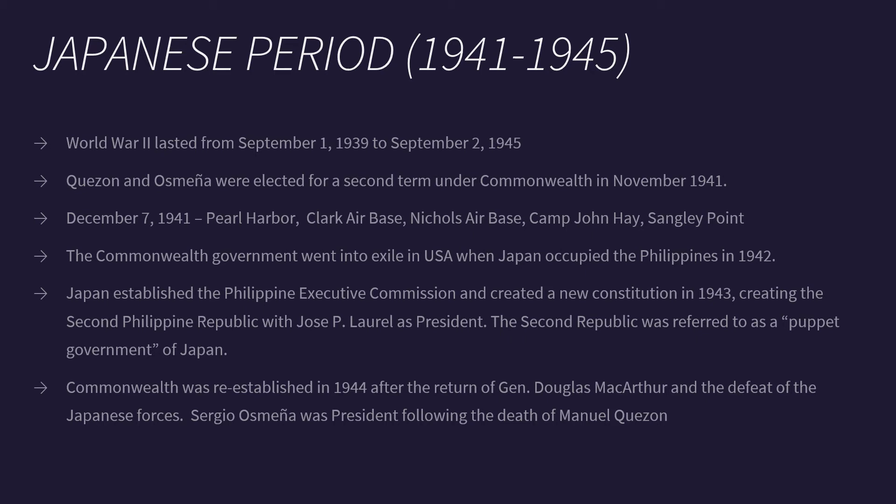In the Philippines, Japan attacked Clark Air Base, Nichols Air Base, Camp John Hay, and Sangley Point — all the military installations of America in the Philippines. This meant that the Philippines had no military protection when Japanese forces arrived. The Commonwealth government of Quezon and Osmeña went into exile in the United States when Japan occupied the Philippines in 1942. Manila was declared an open city in order to prevent the loss of lives. Japan established the Philippine Executive Commission and created a new constitution in 1943, creating the Second Philippine Republic with Jose P. Laurel as President. The Second Republic was referred to as the puppet government of Japan.